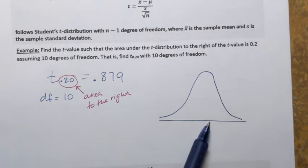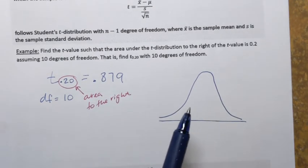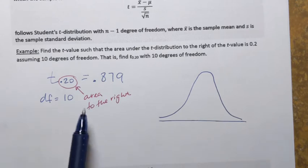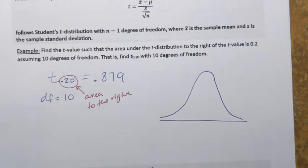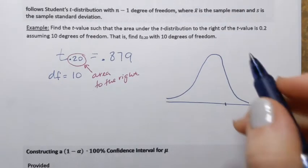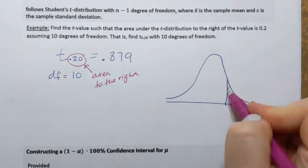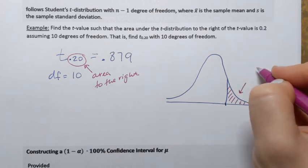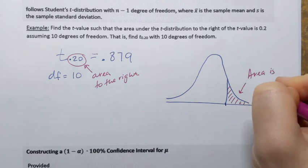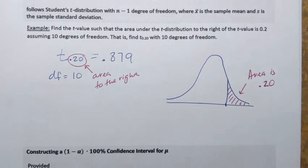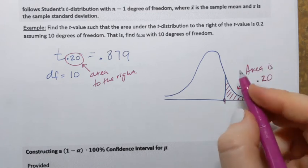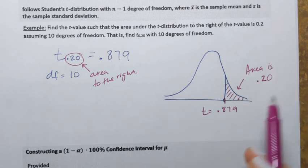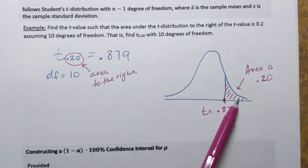So if I sketch a t-distribution, by the way, its shape depends on the sample size, which is tied into the degrees of freedom. Information that I found indicates the following. So the t-value such that the area to the right of the t-value is 0.2, that corresponding t-value is 0.879. So that's where that t-value has to be positioned.